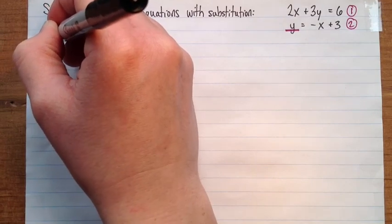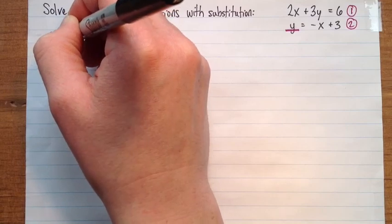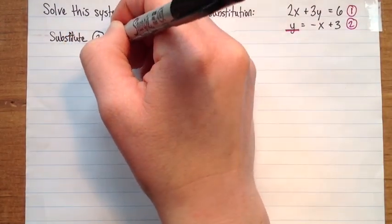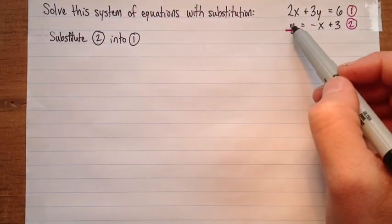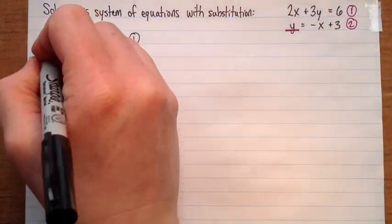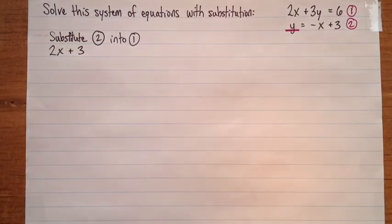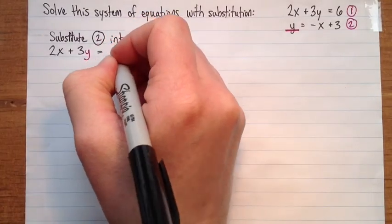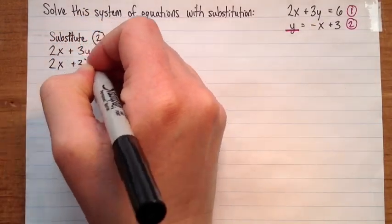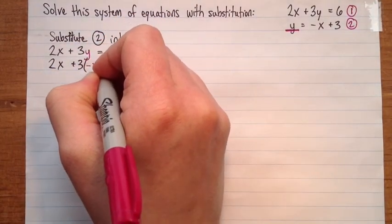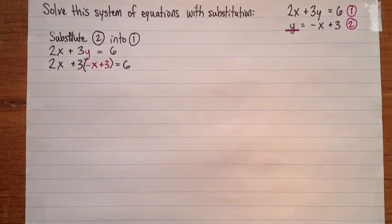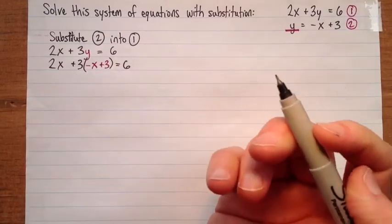So here's what we're going to do — write down what you're doing: substitute equation 2 into equation 1. Equation 1 is 2x plus 3y equals 6. I'll put the y in pink, and now replace that y with negative x plus 3. So I have 2x plus 3 times (negative x plus 3) equals 6.